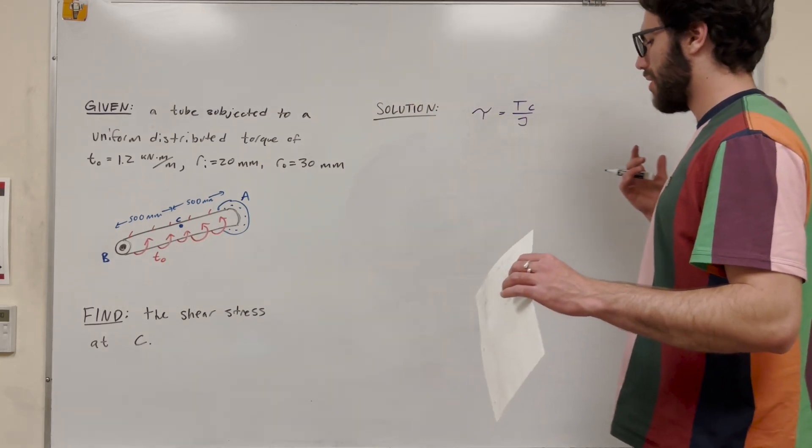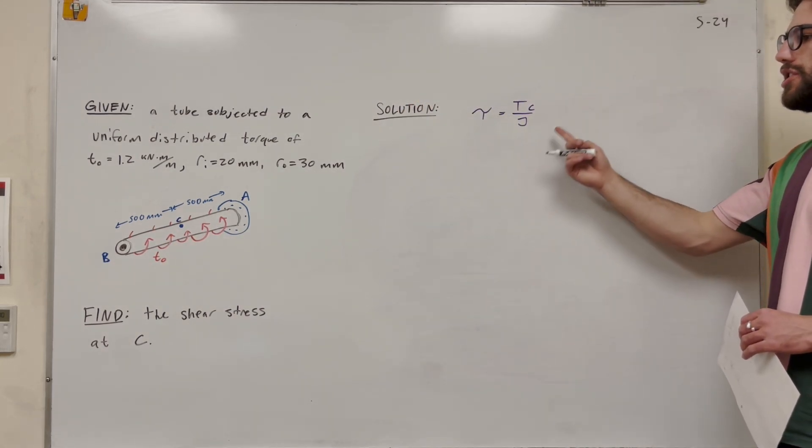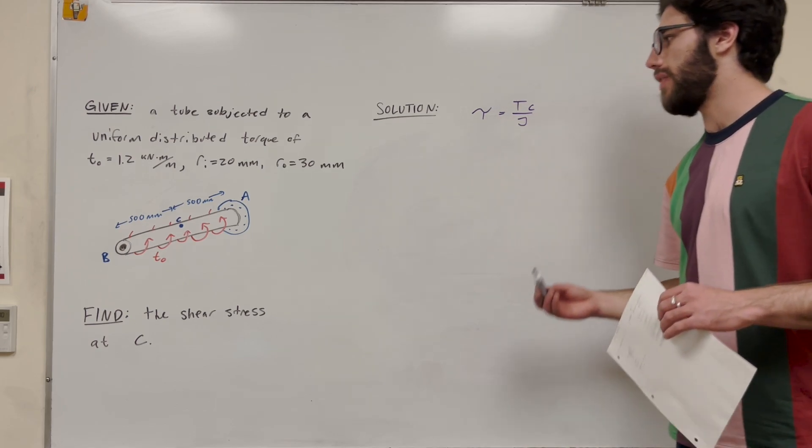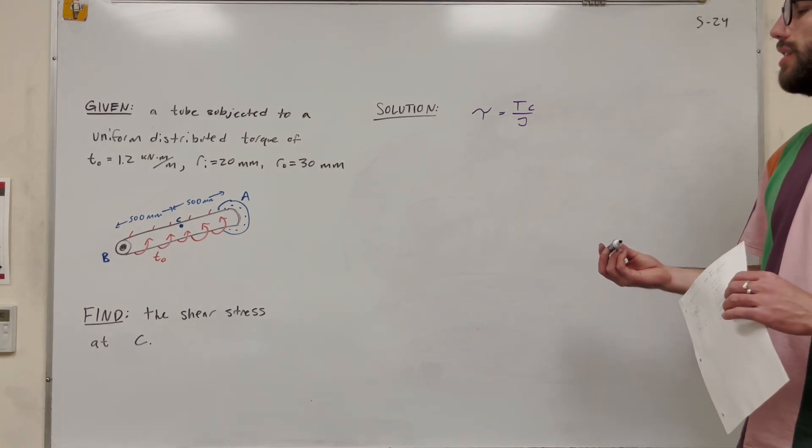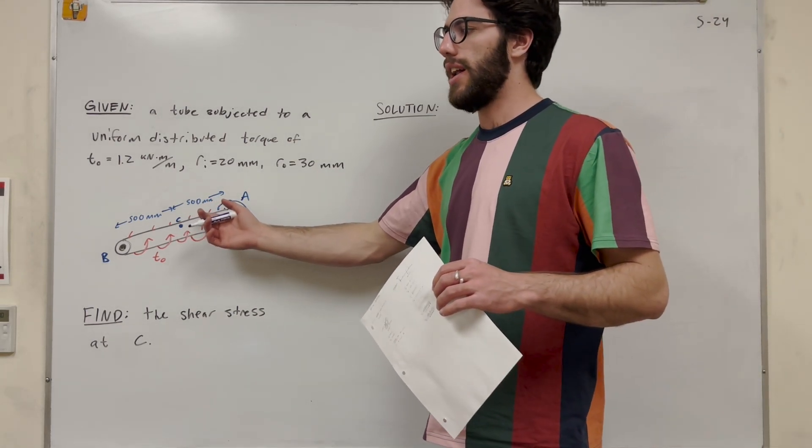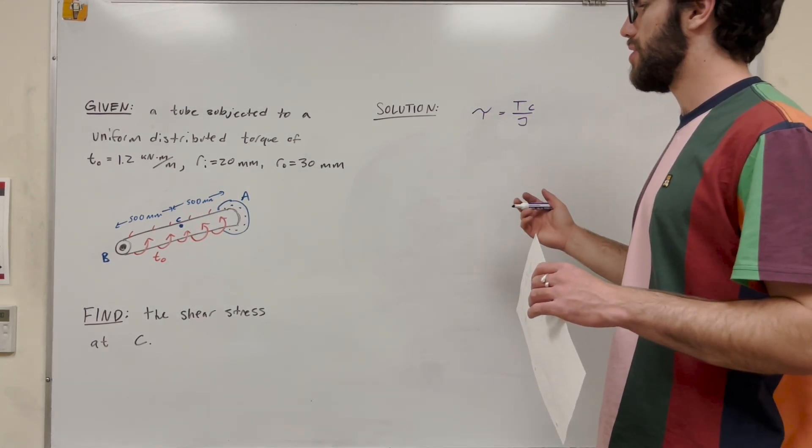So let's solve for it. To do that, we're going to be using the equation: Shear stress is equal to torque times the radius divided by the polar moment of inertia. So torque is the force that's being applied at that point that you're at. And we need to figure out what that's going to be first.